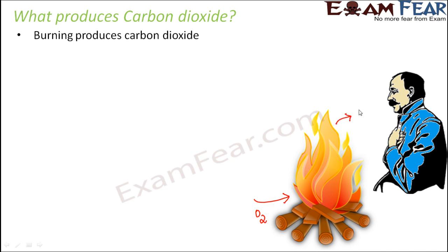As a result of burning, carbon dioxide is produced. It is not the only thing produced — when you stand near a fire where somebody is burning something, after some time you start feeling suffocated. That is because of the smoke, the dust, and carbon dioxide. So carbon dioxide is emitted along with smoke and dust as a result of burning — this is one way carbon dioxide is added to the atmosphere.